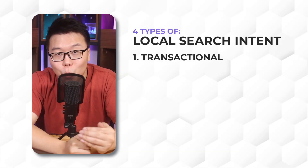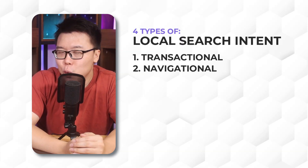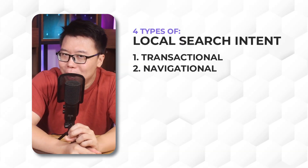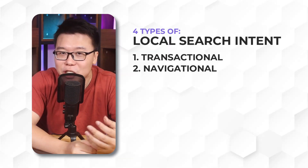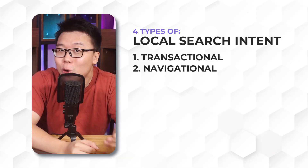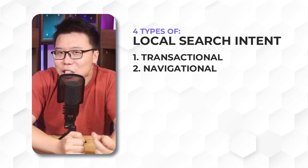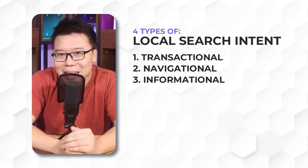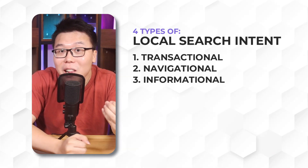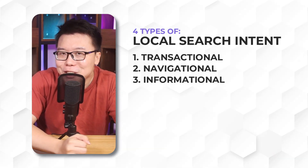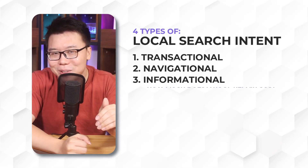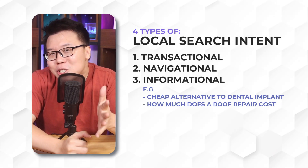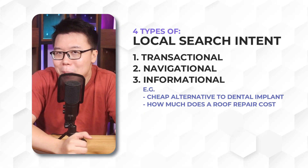The next type is navigational, where people searching for the keyword already know about your brand and just want to find information such as the address or directions to your store. Another search intent you should really work on is informational, where searchers are looking for information that could lead to a sale — like 'cheap alternative to dental implants' or 'how much does roof repair cost.'